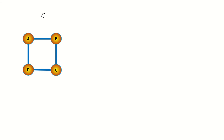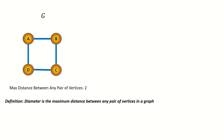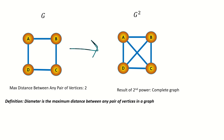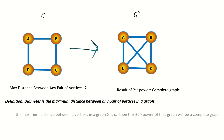Let's take a look at two more properties of powers of graphs. If the maximum distance between two vertices in a graph — also known as the graph's diameter — is d, then the dth power of a graph is a complete graph. This is because if the diameter of the graph is d, and by definition of graph power the dth power connects vertices when their distance is at most d in the original graph, it follows that all vertices in the dth power will be connected to each other, giving us a complete graph.